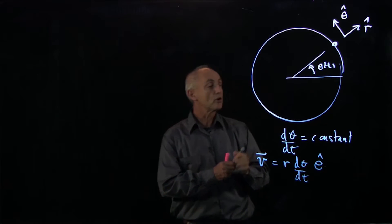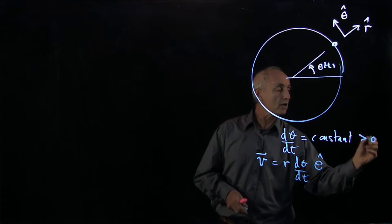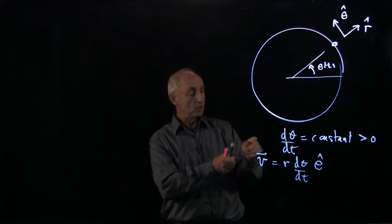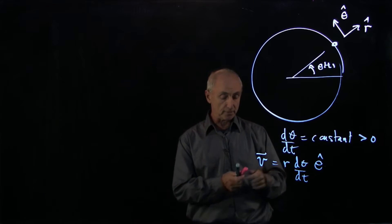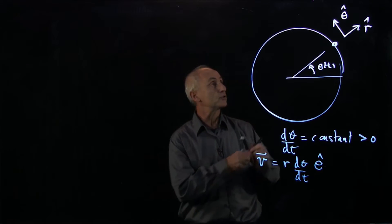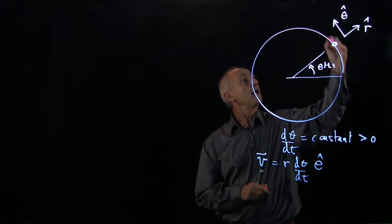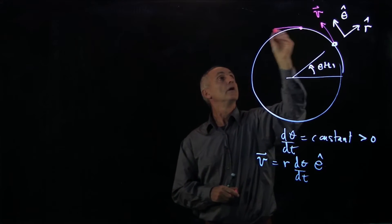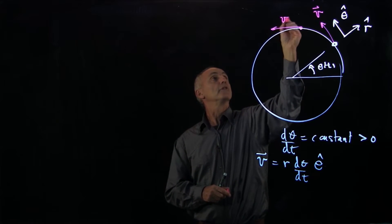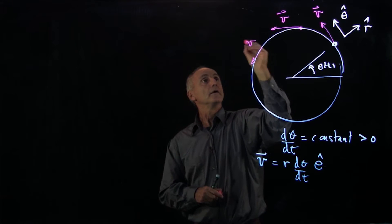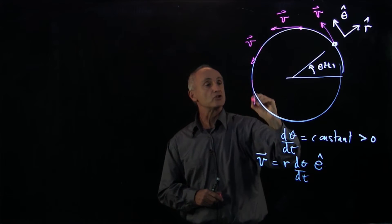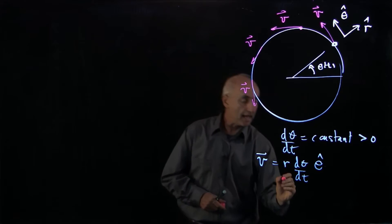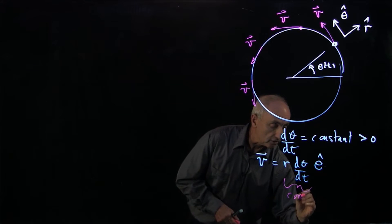Let's assume that this quantity is positive, in which case the velocity is pointing in the positive θ̂ direction. That means that everywhere in the circle, the velocity is tangential to the circle, and the magnitude is a constant.